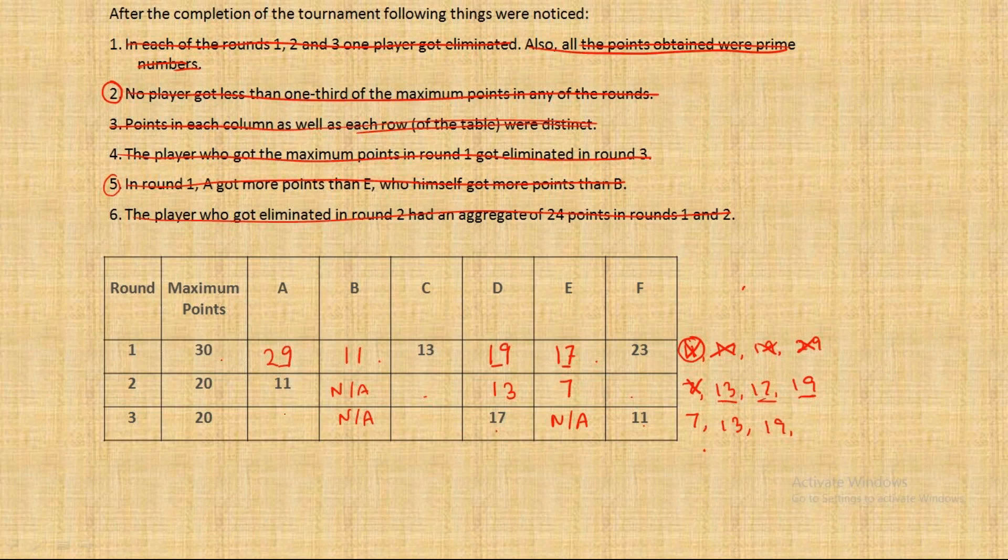So A has to get eliminated, so A must be getting 7. So 7 is placed and you can see between 13 and 19 you cannot write 13 in C's column, so 19 has to be written here. Our third round is complete and now we clearly know what number has to be written here: 17 and 19 here. So with this we are successful in filling out the table completely without any ambiguity.